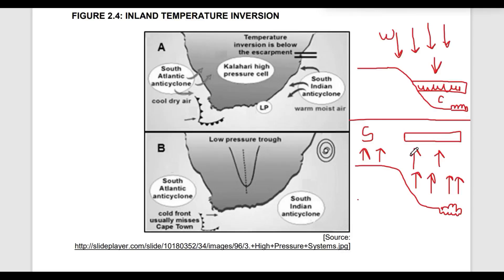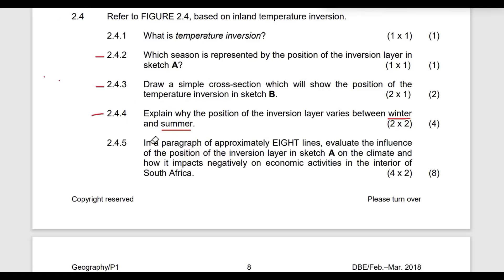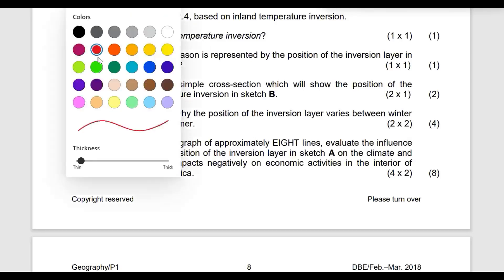The upward position of the inversion layer in summer allows more humidity to evaporate and form clouds — that's why you receive summer rainfall. Those are the fundamental concepts explaining the position of the inversion layer in winter and summer. Take some key ideas from this explanation to apply during exams. Please note down these notes, and feel free to replay the video before exams or during your study time.